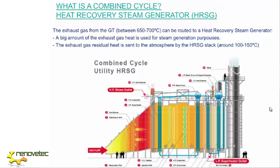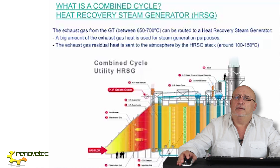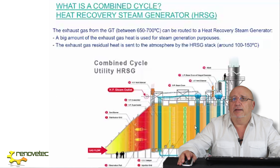The second important element in a combined cycle is the boiler. The Heat Recovery Steam Generator (HRSG) is the element where we transform the heat contained in the exhaust — the flue gas of the gas turbine — into steam, into potential energy: steam with some pressure and some temperature. We can obtain steam at one, two, or three different pressure levels to feed one, two, or three steam turbines. Here we can see the different bundles of tubes that compose the HRSG, and finally the gas goes to a stack to the atmosphere.